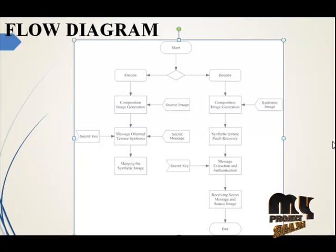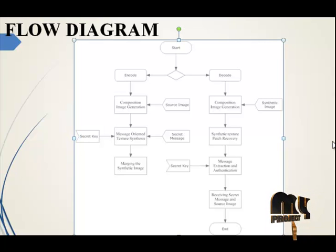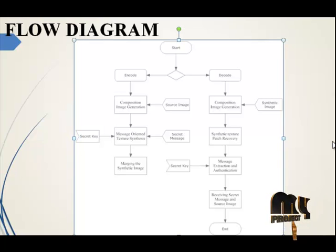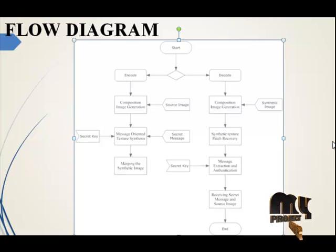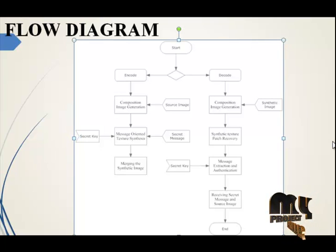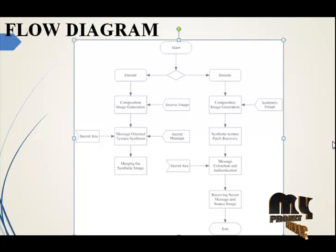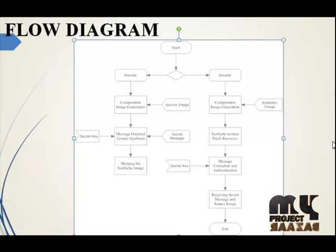In the decoding phase, the synthetic image is received from the user, then it is split into a number of patches. The patches containing a message are detected and, after entering the secret key, the message and original image are retrieved.